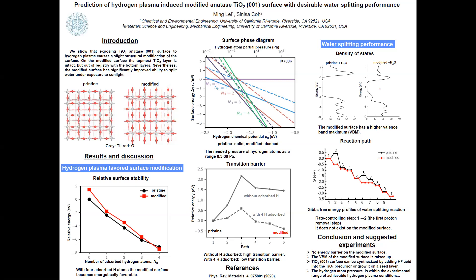One of the methods is to modify the surface structure by hydrogenation. This treatment changes the color of the titanium dioxide from white to black. The band gap narrowing of the black titanium dioxide is achieved by raising the valence band maximum without changing the conduction band minimum. However, it remains unknown exactly which structural modification leads to the favorable band alignment of the black titanium dioxide.